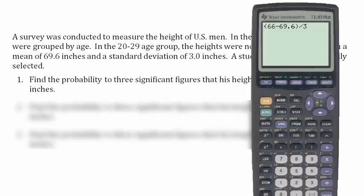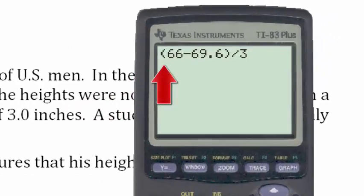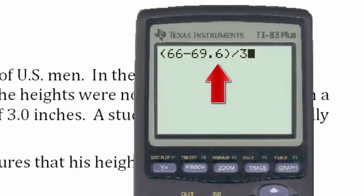We will use the z-score formula, and using first a parenthesis, and then 66 minus 69.6, close the parenthesis, and divide by 3.